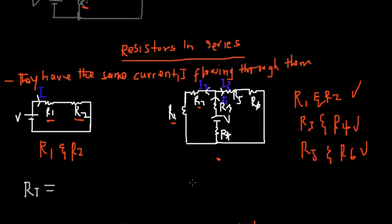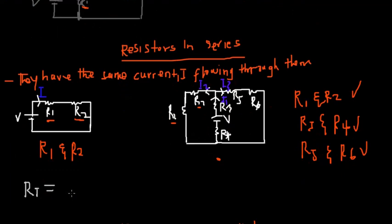Now that we can identify resistors in series, how do we calculate the total resistance in series? Since R1 and R2 have the same current passing through them, all we do is add them — simple addition. The total resistance equals R1 plus R2. That is how we calculate resistance in series.